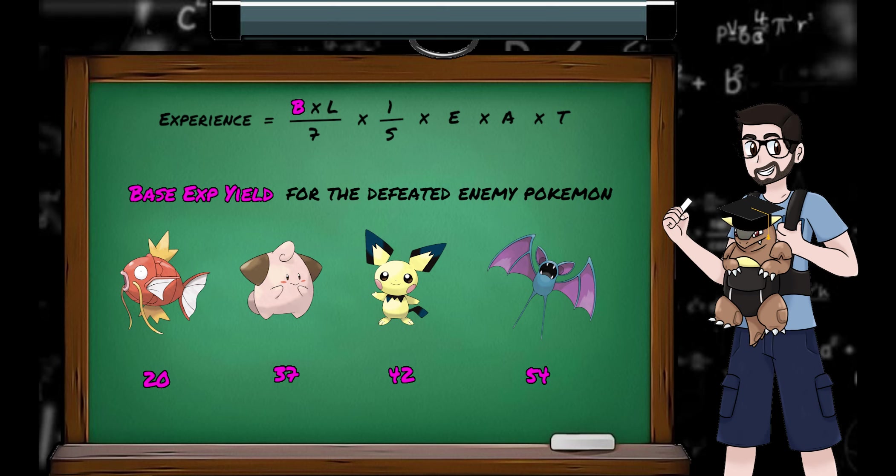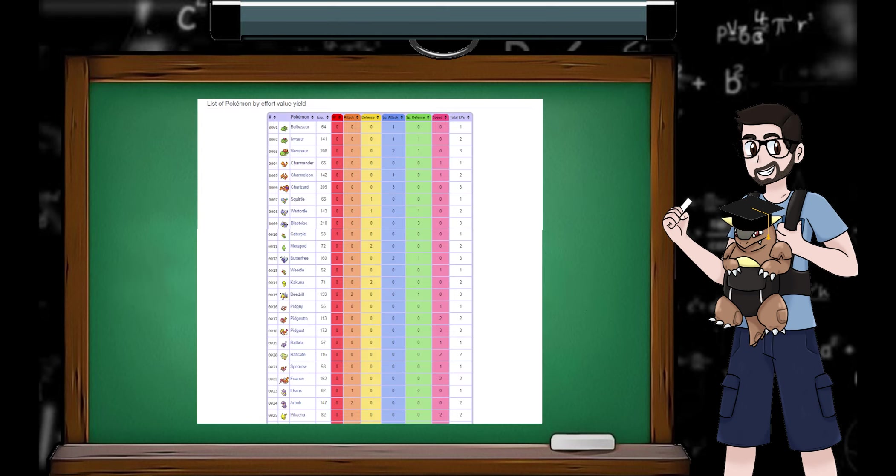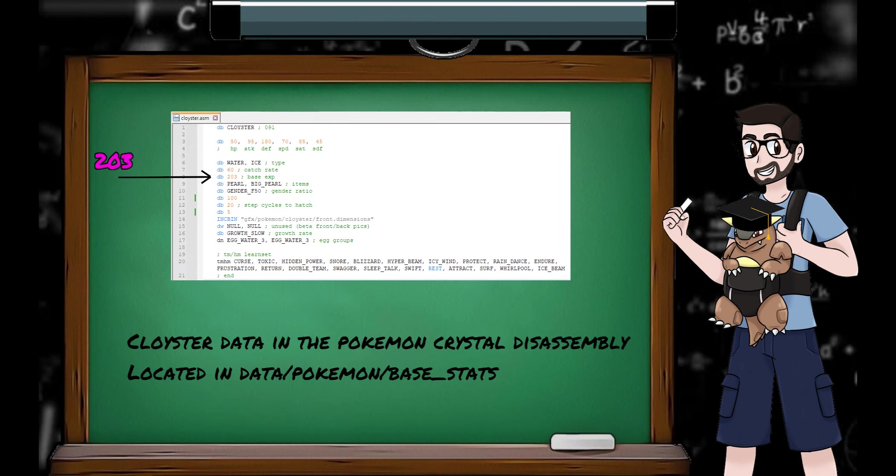I don't believe there's any way to see a Pokemon's base yield in-game, but Bulbapedia has them listed, although if you don't trust Bulbapedia you could always crack open the game's disassemblies and see each species' values there.